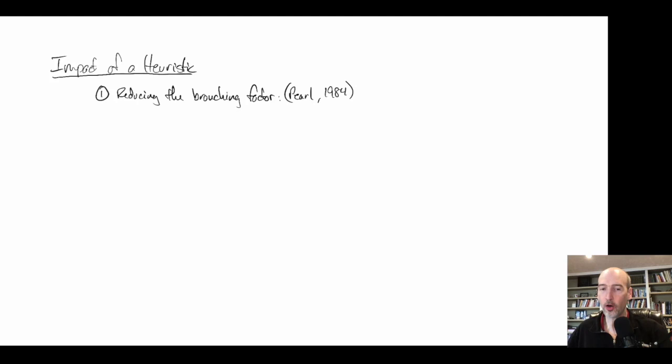In that work, according to the assumptions that Pearl made about the state space, the assumption was that a heuristic takes some branching factor b and makes it into a value a, where a is going to be less than or equal to b. So my state space instead of being b to the d would be a to the d, where a is some smaller branching factor.